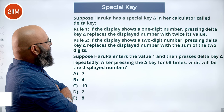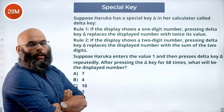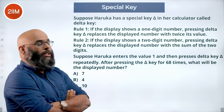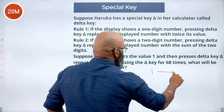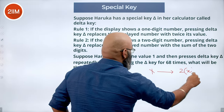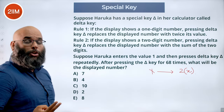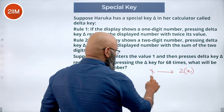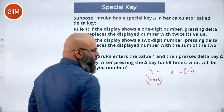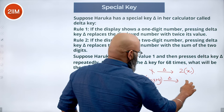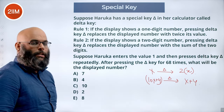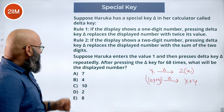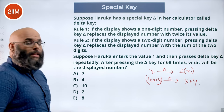Haruka has a special delta key on a calculator. If the display shows a one-digit number, pressing delta doubles it. If it shows a two-digit number, pressing delta replaces it with the sum of its digits. Starting with 1: delta gives 2, then 4, then 8, then 16 (two digits), then 1+6=7, then 14, then 1+4=5, then 10, then 1+0=1. After 9 presses we return to 1, and the next press gives 2 — a cycle of length 9 starting from the second press.